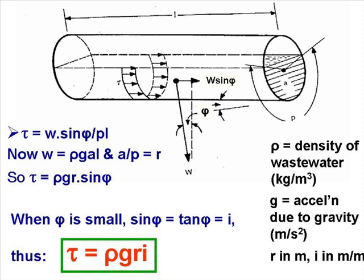Now the weight, w, is equal to ρgal, where ρ is the density of the wastewater in kilograms per cubic metre, and g is the acceleration due to gravity in metres per second squared. And we know that a over p is the hydraulic radius. So we can express τ as ρgr sine φ.